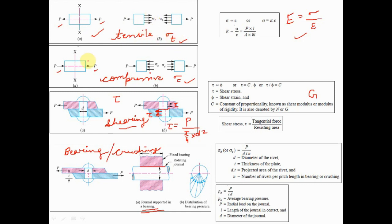On the contrary, if we have a compressive force acting in order to push the body, the stress generated in response to this external force P is called compressive stress, also denoted by sigma_c.